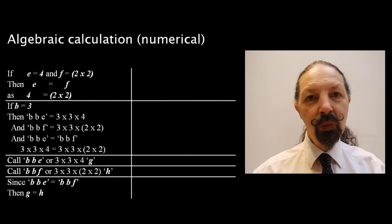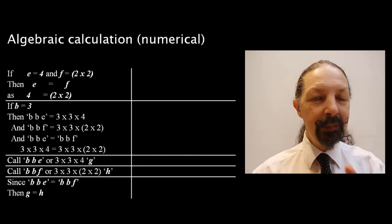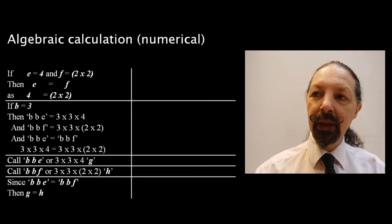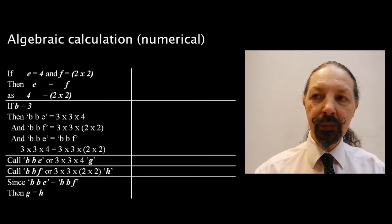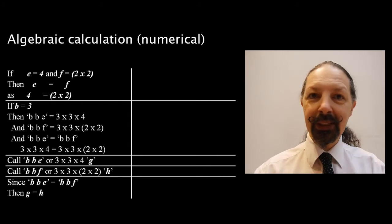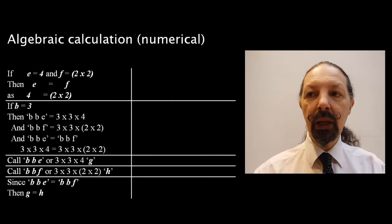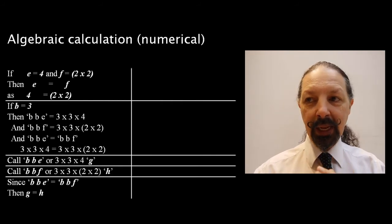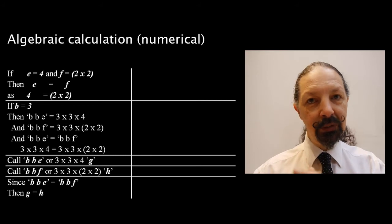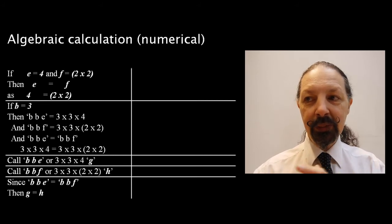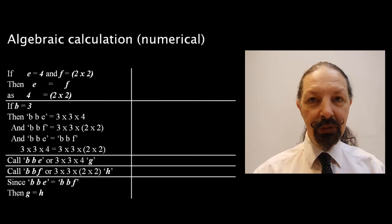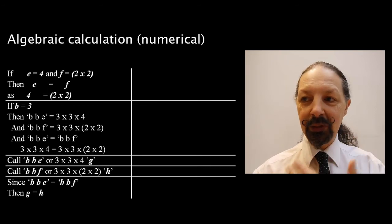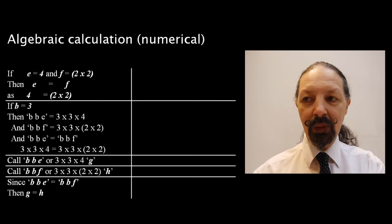Let's see how it works with numbers, because that may be simpler for people to understand. Let's say E equals 4, and F equals 2 times 2. E equals F, because 4 is exactly the same value as 2 times 2, it's just expressed differently. If B equals 3, then the expression BBE is equivalent to 3 times 3 times 4, and BBF 3 times 3 times 2 times 2, and BBE is equal to BBF, because 3 times 3 times 4 is exactly the same as 3 times 3 times 2 times 2.